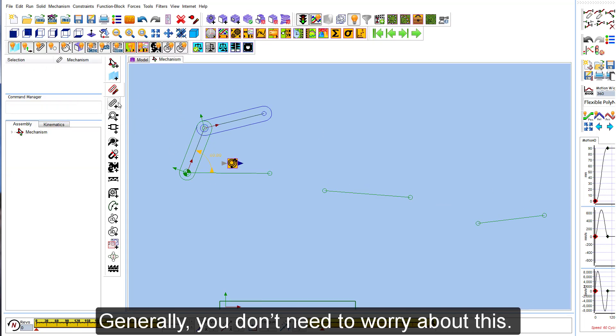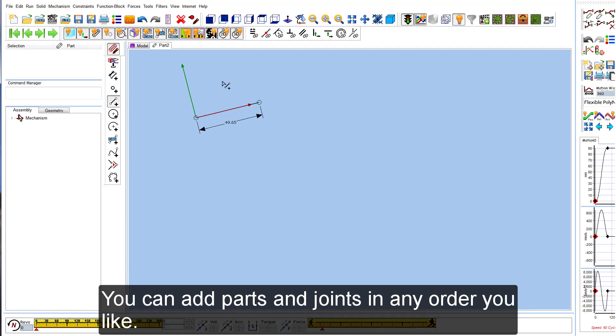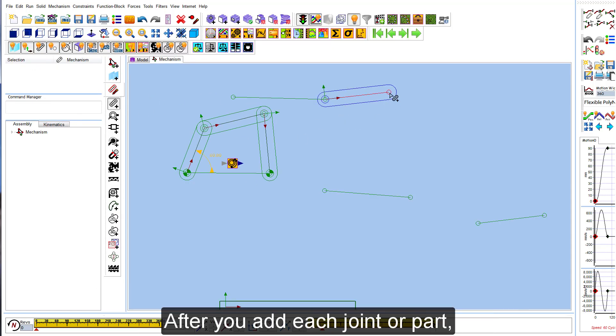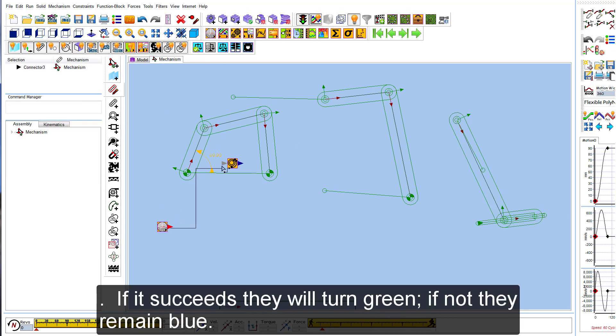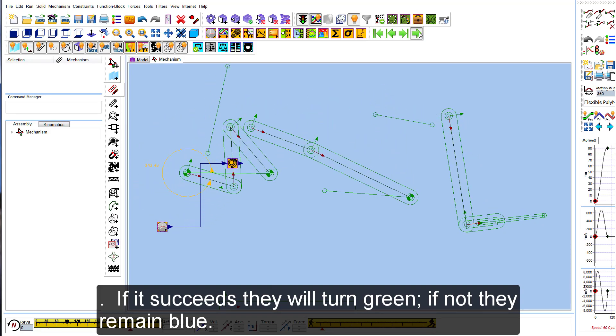Generally you don't need to worry about this. You can add parts and joints in any order you like. After you add each joint or part, MD Pro will try and compose the mechanisms into dyads which have zero degrees of freedom. If it succeeds, they will turn green. If not, they remain blue.